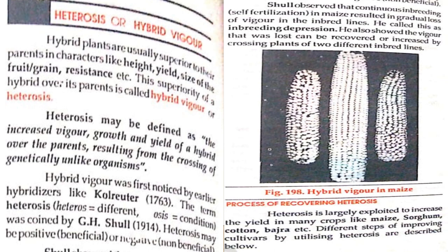Heterosis or hybrid vigor: hybrid plants are usually superior to their parents in characteristics like height, yield, size of fruit or grain, resistance, etc. The superiority of the hybrid over its parents is called hybrid vigor or heterosis. Heterosis may be defined as the increased vigor, growth, and yield of a hybrid over the parents, resulting from the crossing of genetically unlike organisms.